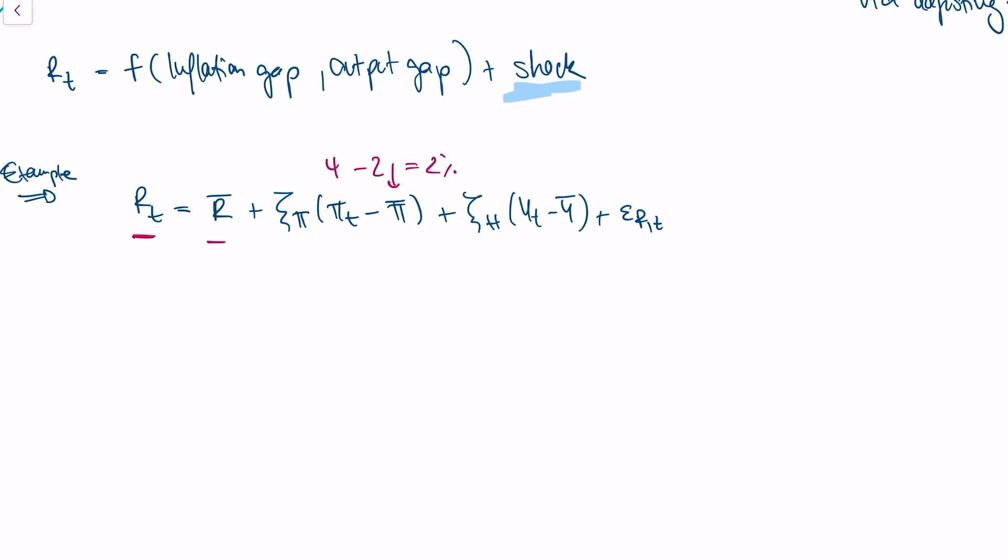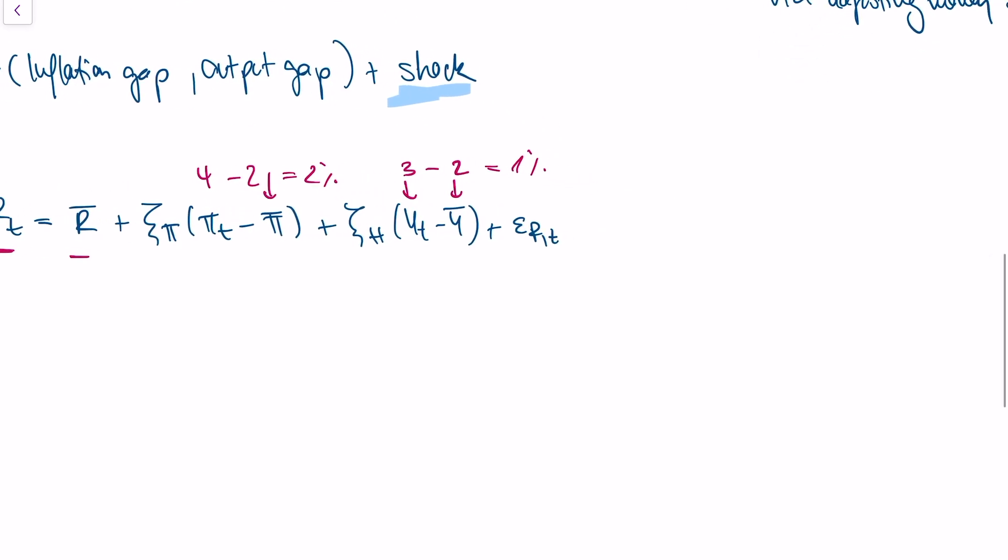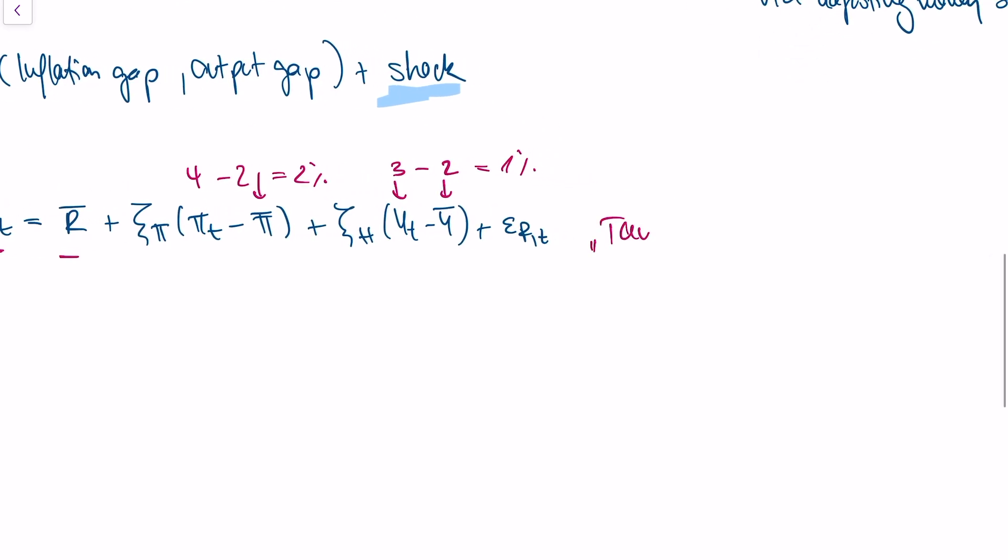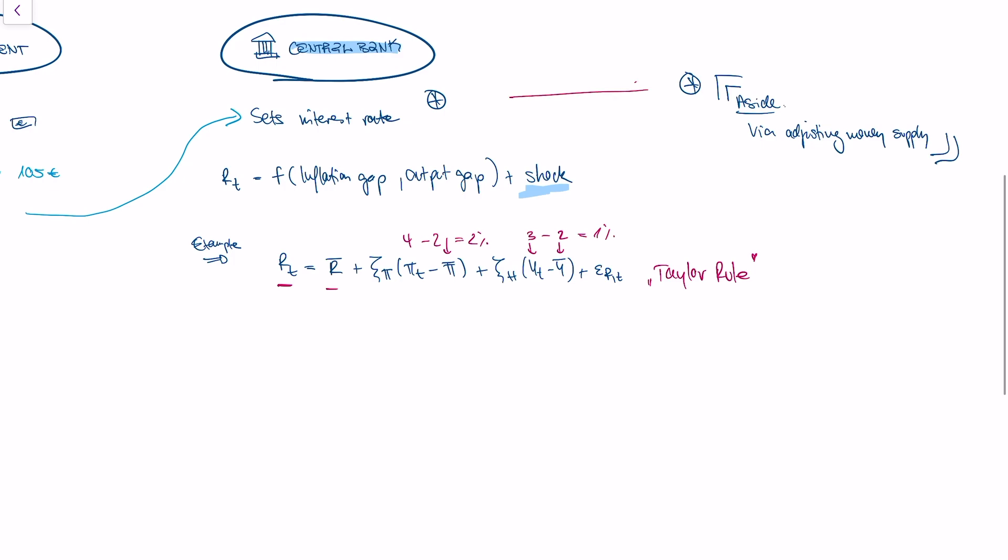The second one is the output gap from the economy. Let's say that the economy has a baseline production of 2 billion euros, but the production this year is at 3 billion euros. Then I also want to set a higher interest rate because I want to cool down the economy. So in this case, I would increase my interest rate by 1%. I'm just making up the numbers. This is actually called the Taylor Rule, this kind of formula by which the central bank sets interest rates. As a little aside, interest rates are set by adjusting the money supply in this model, but I don't want to get into this right now.